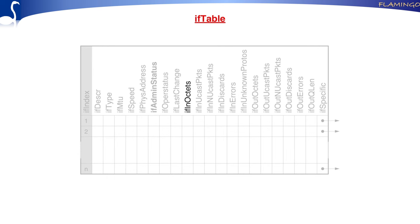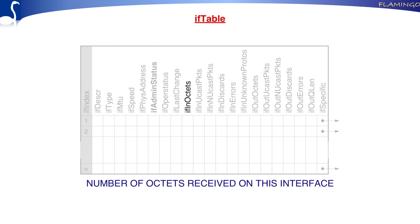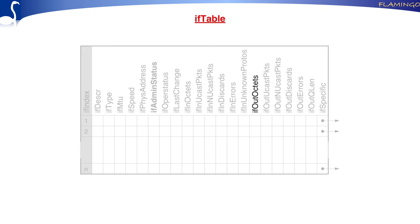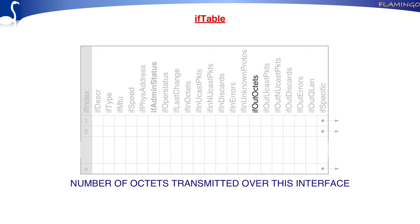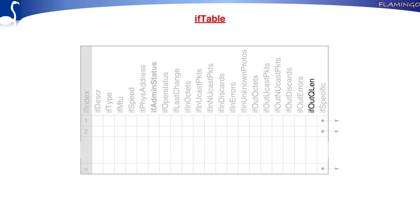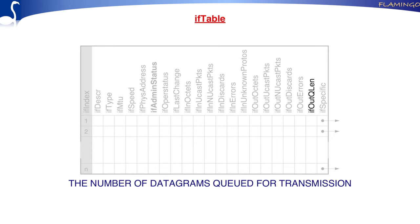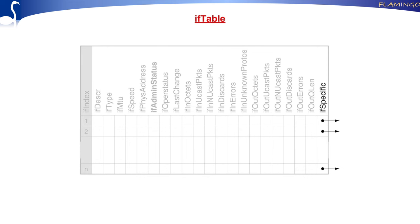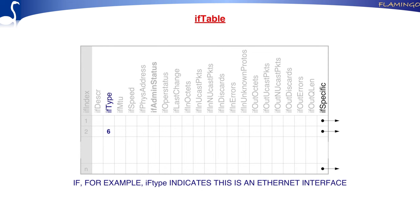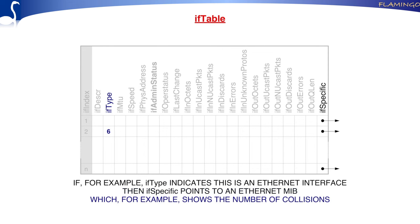We have IF in octets — the number of bytes coming in over this interface — and IF out octets, the number going out. There is also the queue length, showing how many packets are queued before transmission. There is a field which is a pointer to a specific MIB — for instance, if the type indicates this is an Ethernet interface, you can find here the pointer to the Ethernet MIB. If you want to know the number of collisions, you follow this pointer to find the Ethernet-specific stuff.